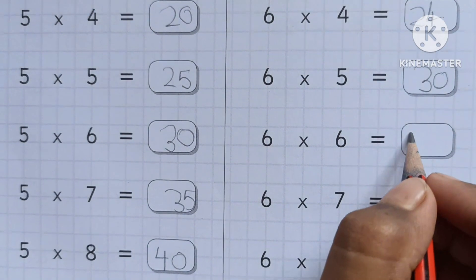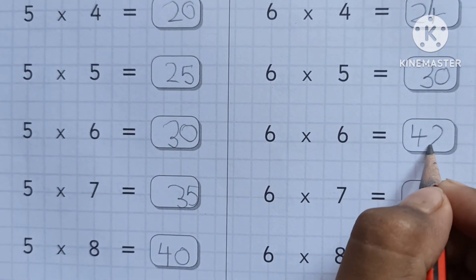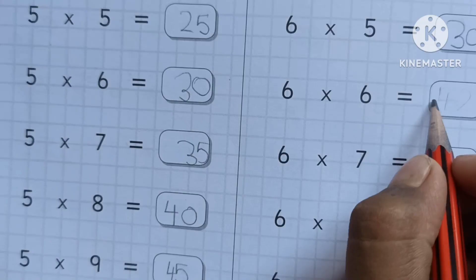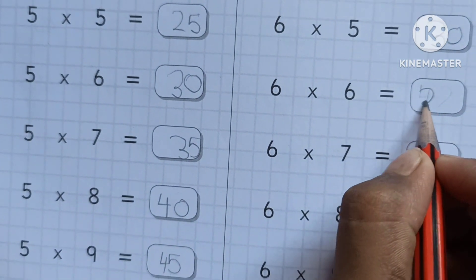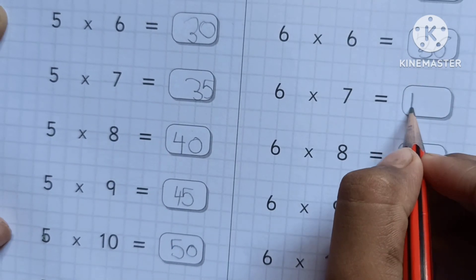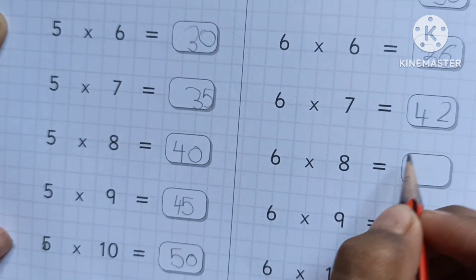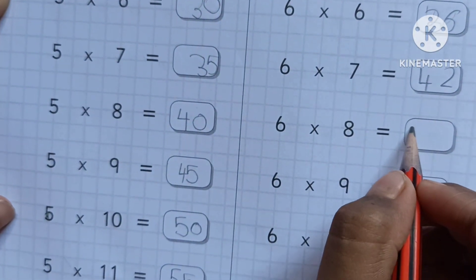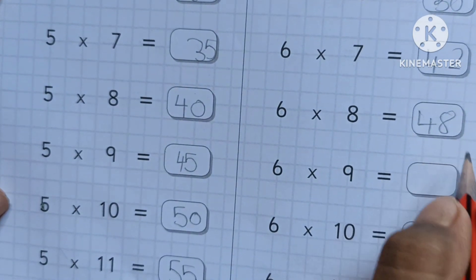Six sixes are thirty-six. Six sevens are forty-two. Six eights are forty-eight.